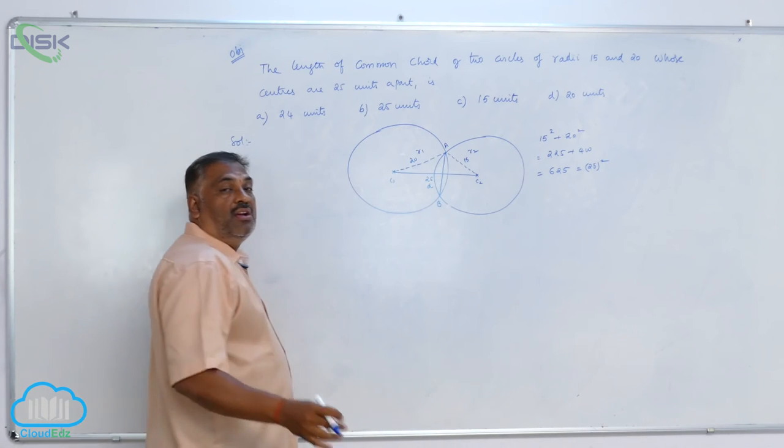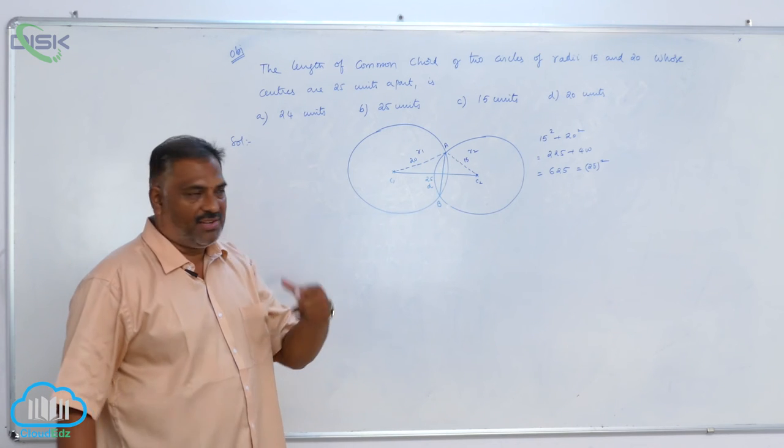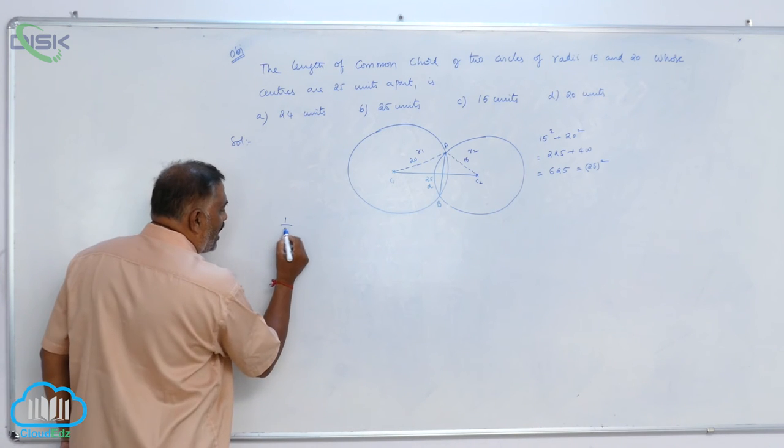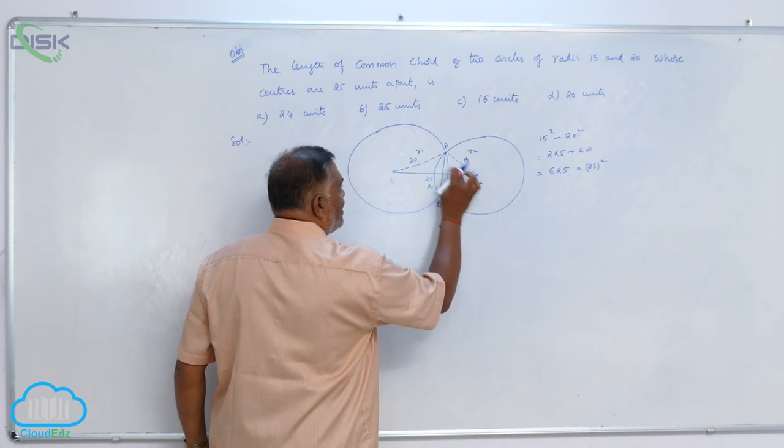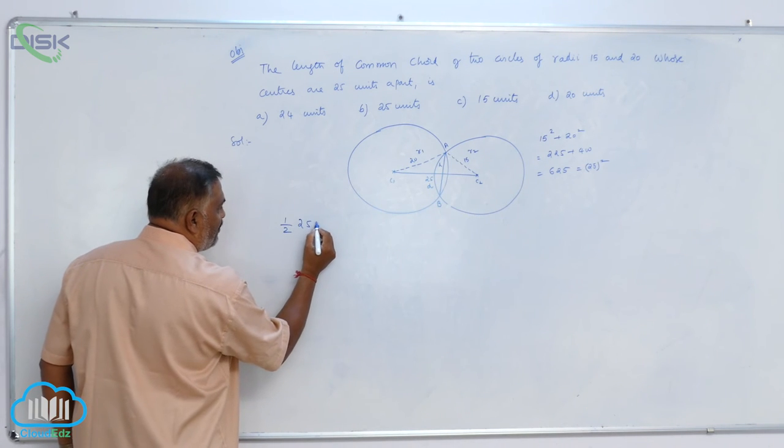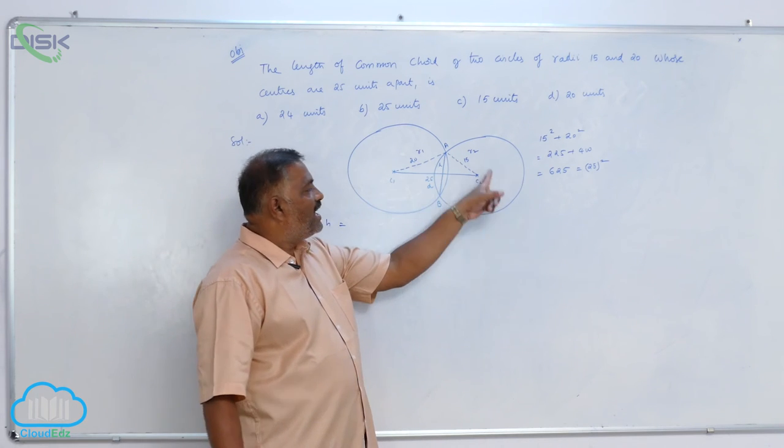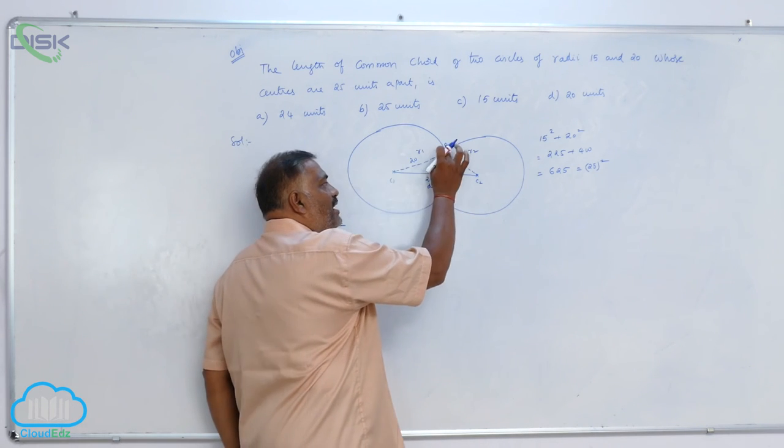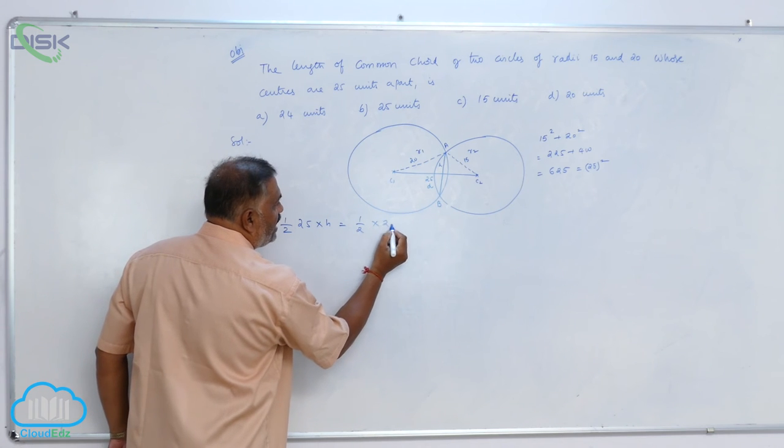In a right angled triangle, what is the area of the triangle? Half into base into height. Half into 25 into H is equal to, since it is a right angled triangle, if this is the base, this will be the height, that is half into 20 into 15.